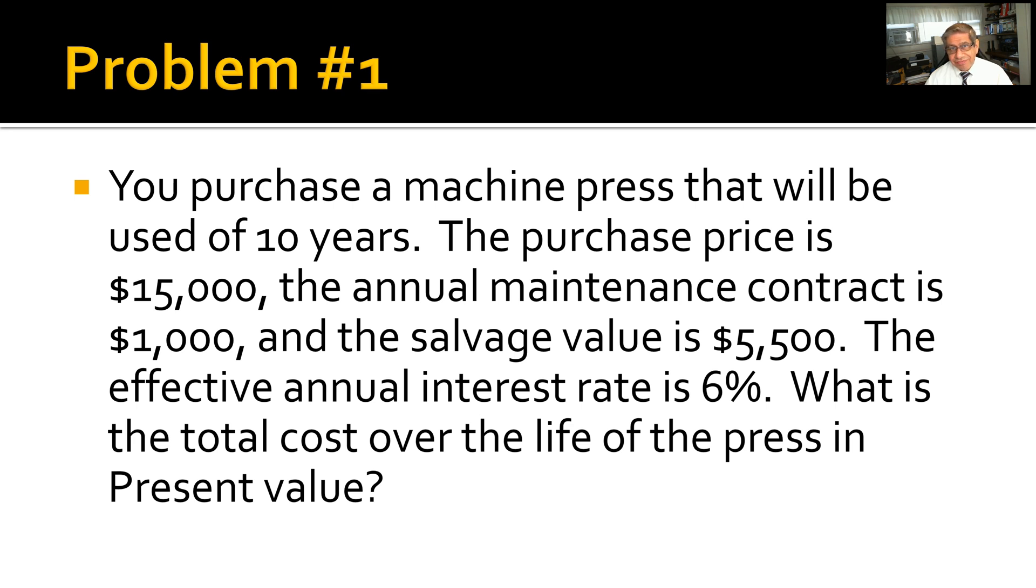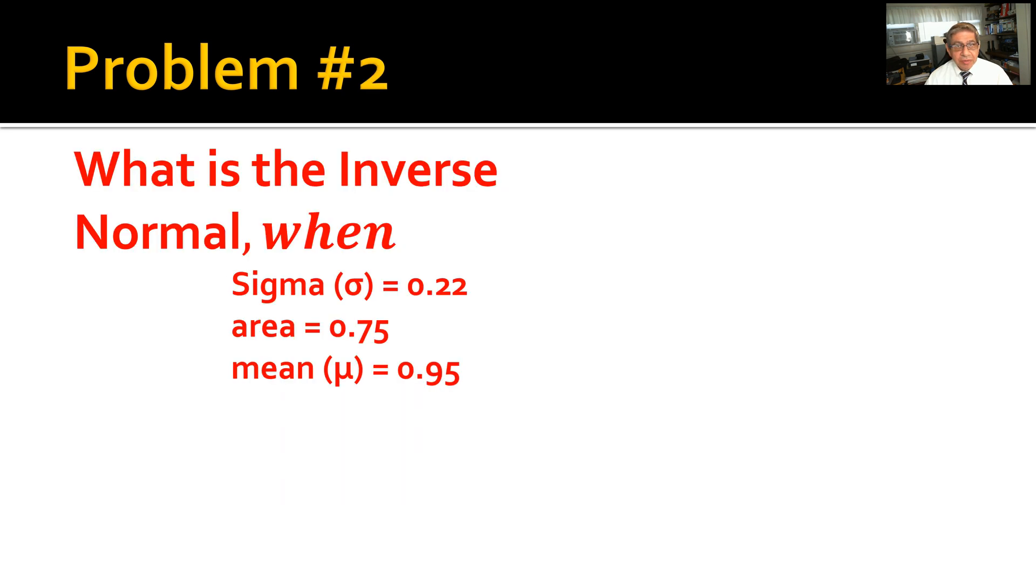Problem number two: What is the inverse normal when sigma equals 0.22, area equals 0.75, and the mean mu is 0.95? These are the possible choices of answers; one of those is right.